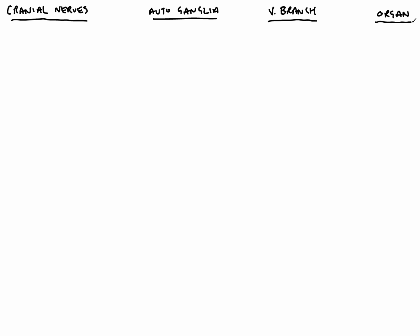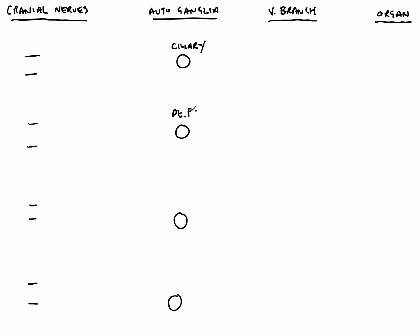There are four cranial nerves which contain autonomic fibres. There are also four autonomic ganglia associated with the head. These are known as the ciliary ganglion, the pterygopalatine ganglion, the submandibular ganglion, and the otic ganglion.